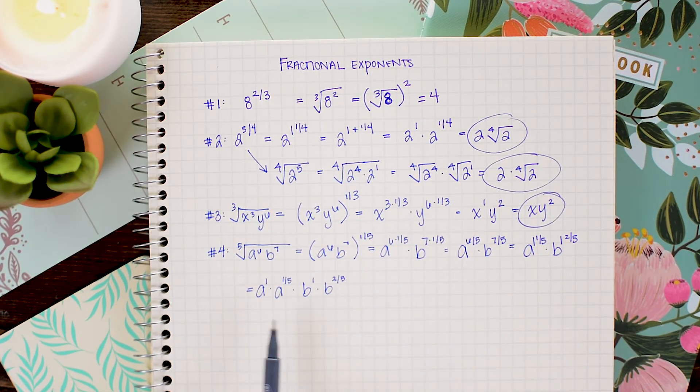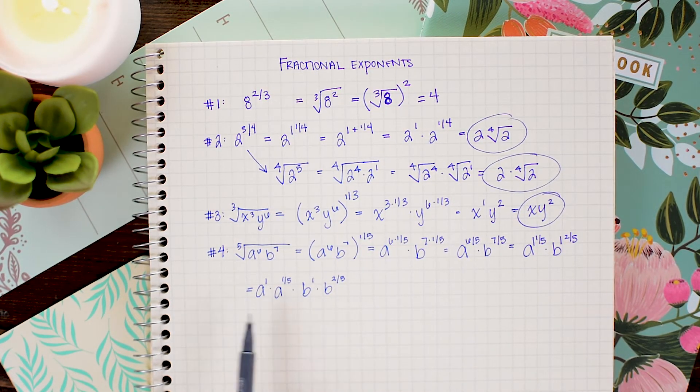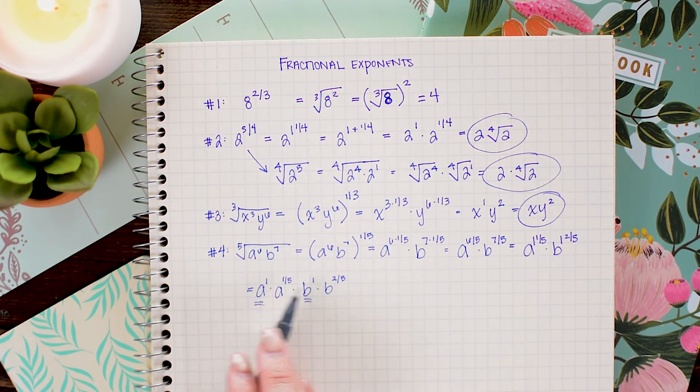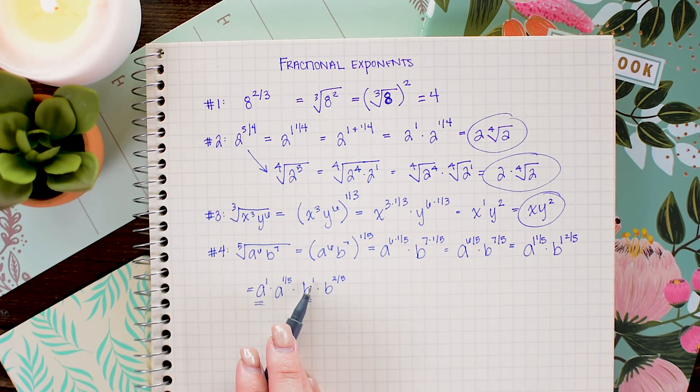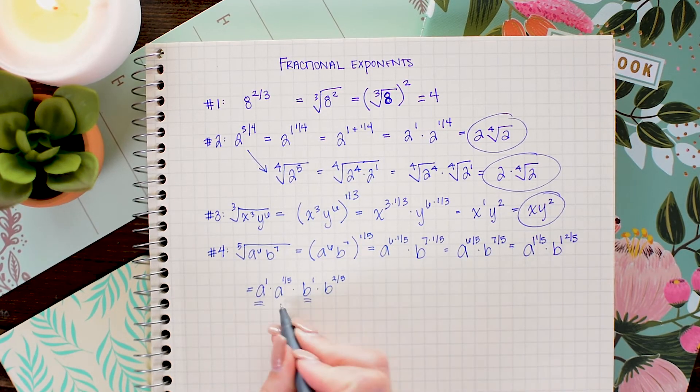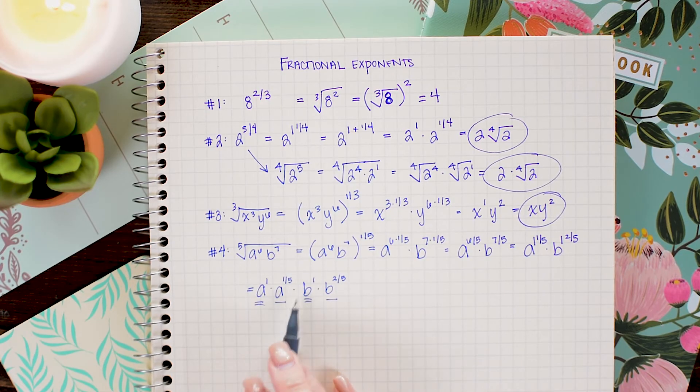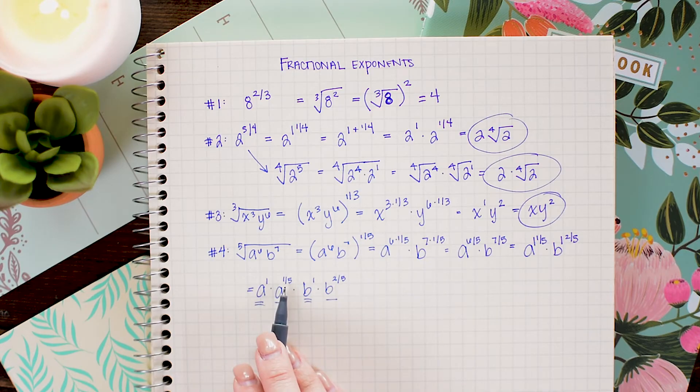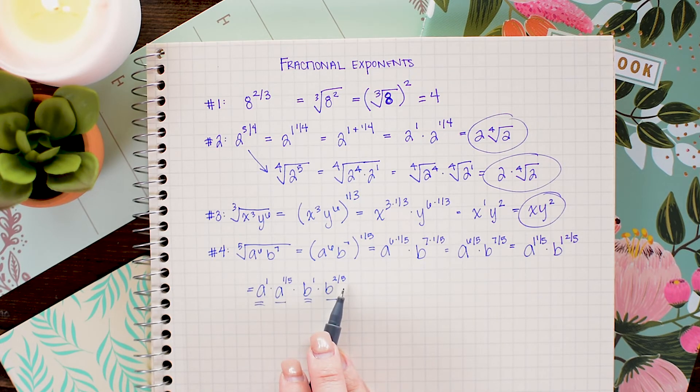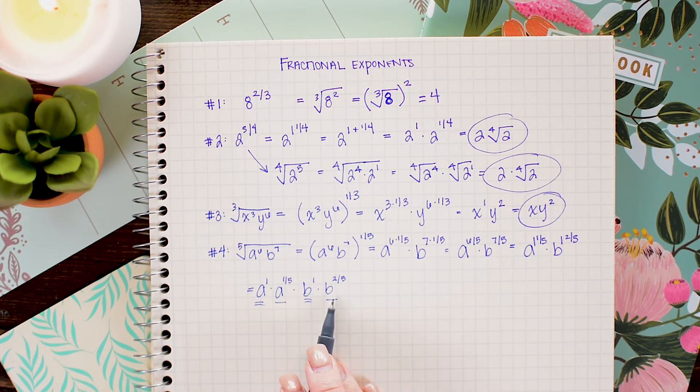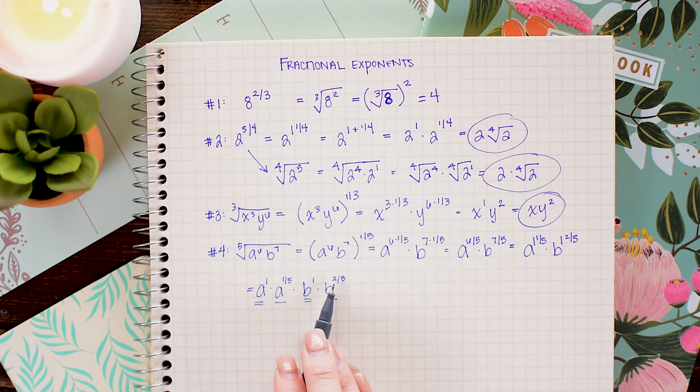My final step is just to clean this up a little bit. I'm going to pull this a and b into the front and I can drop the powers of 1 on them since that is implied. The other a and b can now be put back under a fifth root power since they both have exponents with denominators of 5. The only difference is that this a is going to be raised to the first power underneath the radical whereas this b is going to be raised to the second power under the radical.